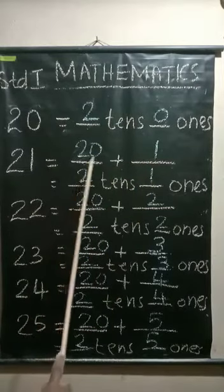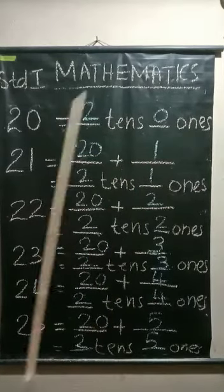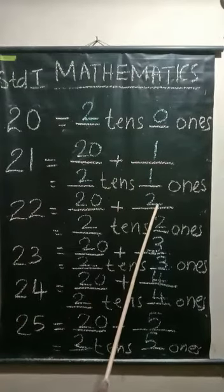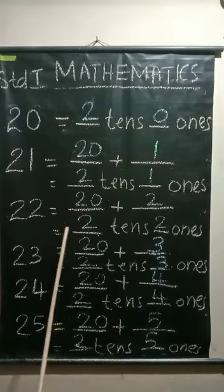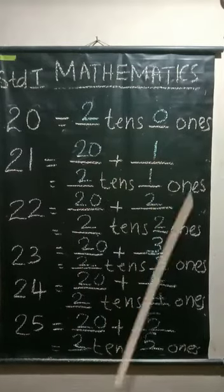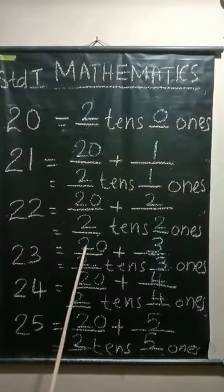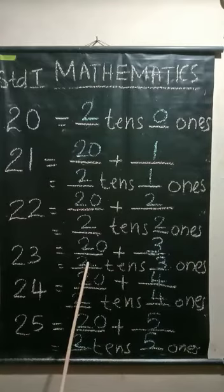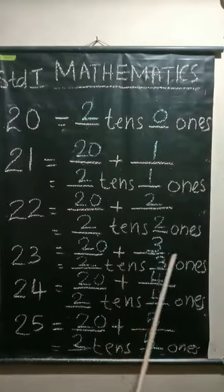Twenty-two: twenty plus two. Twenty-two equals two tens, two ones. Twenty-three: twenty plus three. Twenty-three, two tens, three ones.